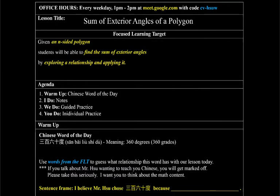In class today, let's look at exterior angles. We looked at interior angles in the previous week. Given an n-sided polygon, students will be able to find the sum of exterior angles by exploring a relationship and applying it. Today the word of the day is 360 degrees.